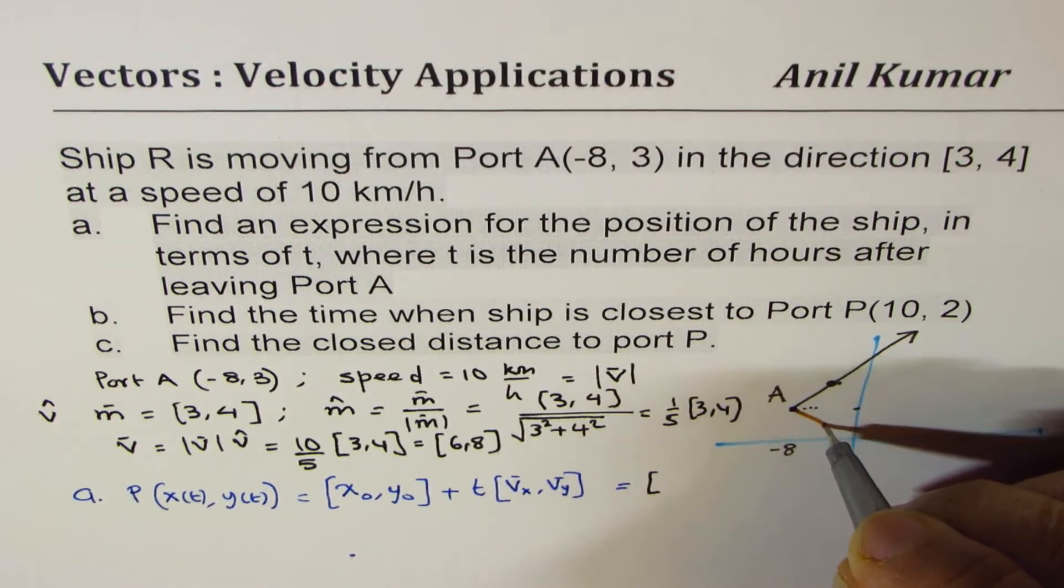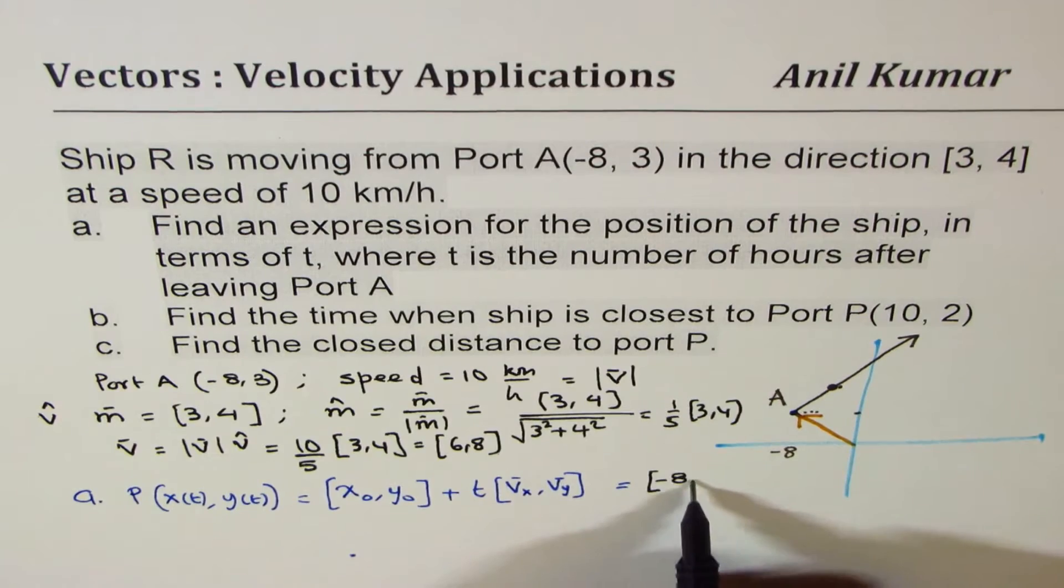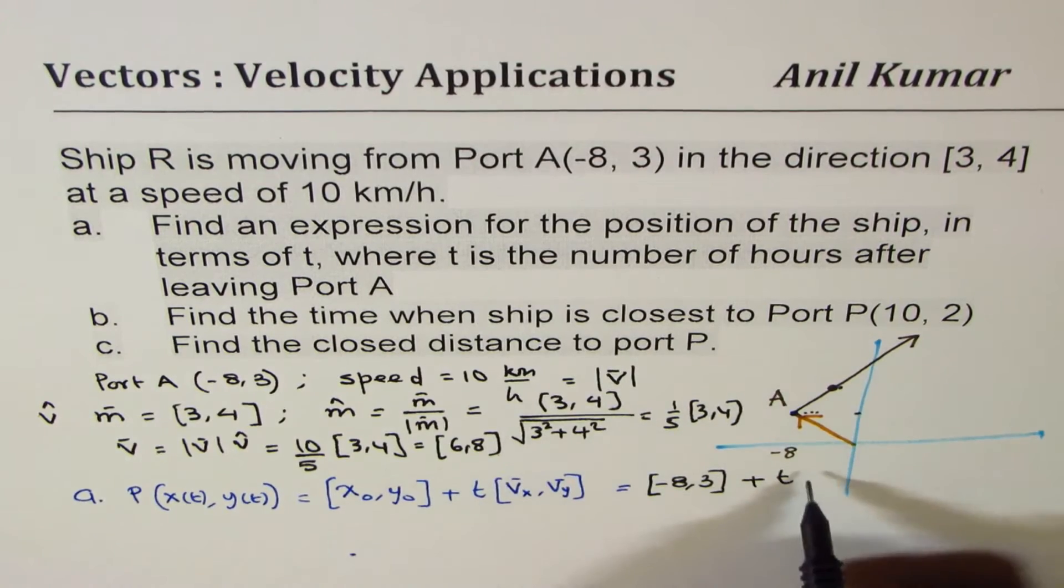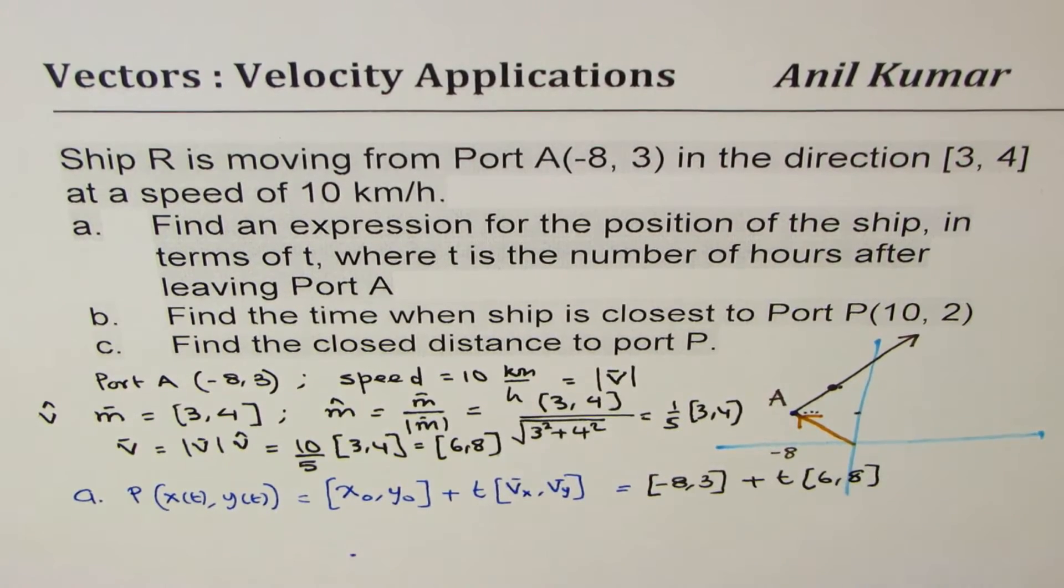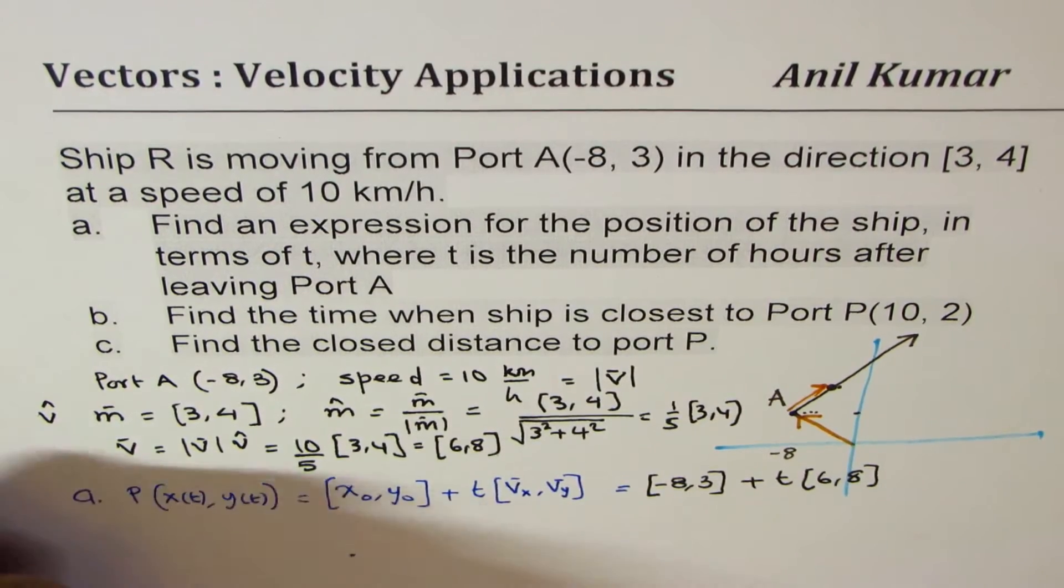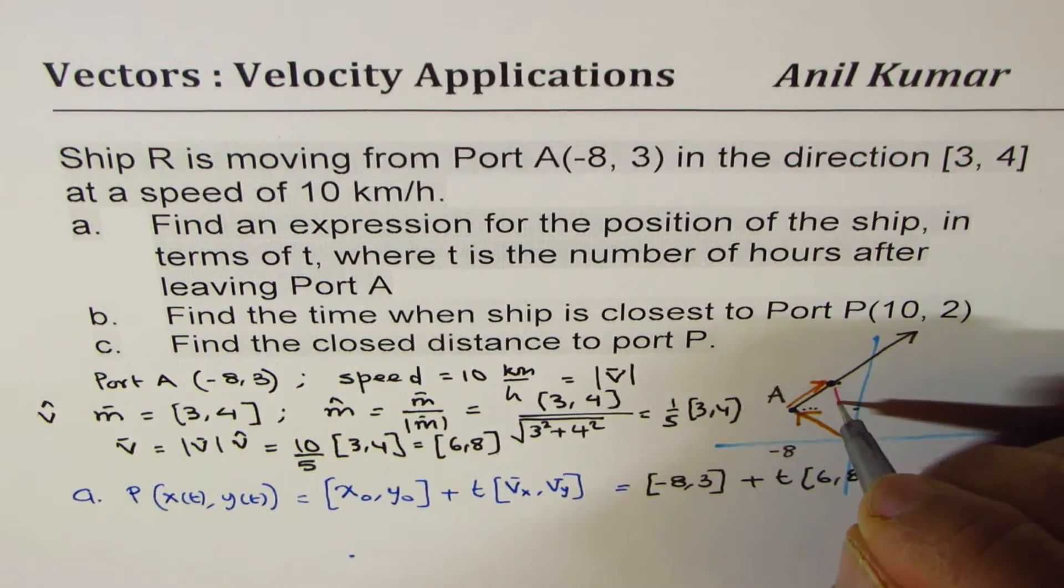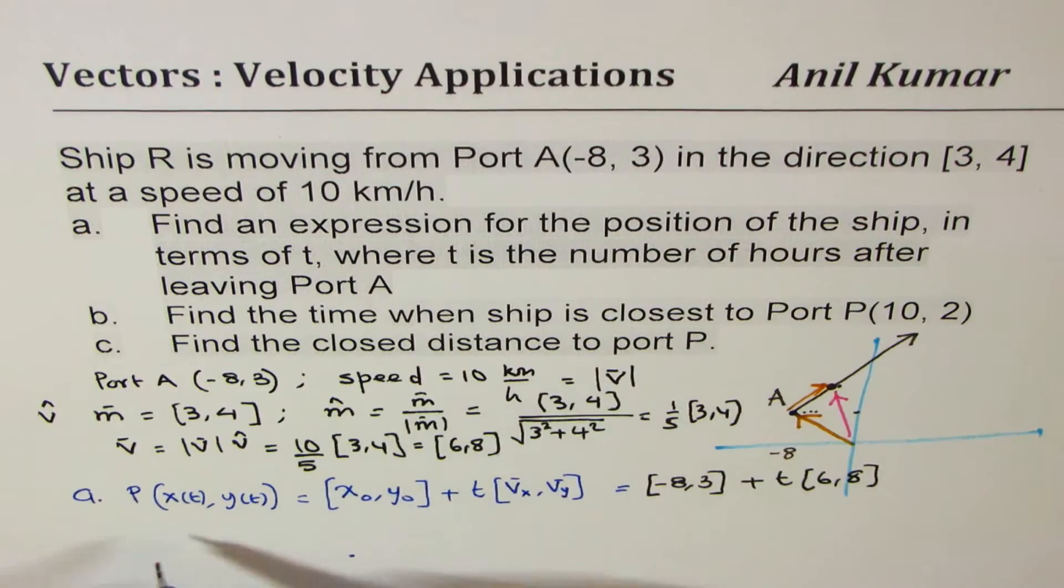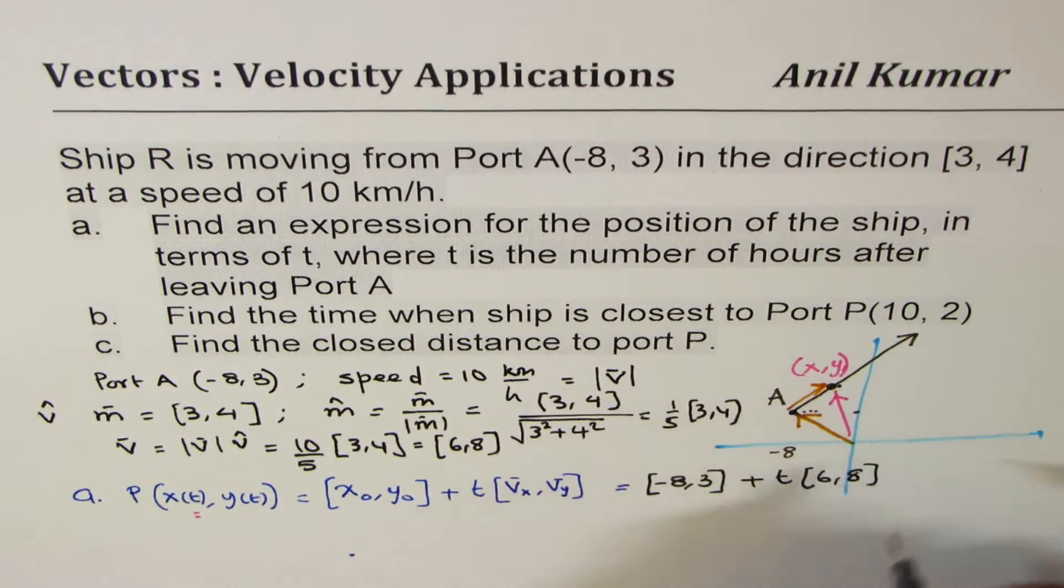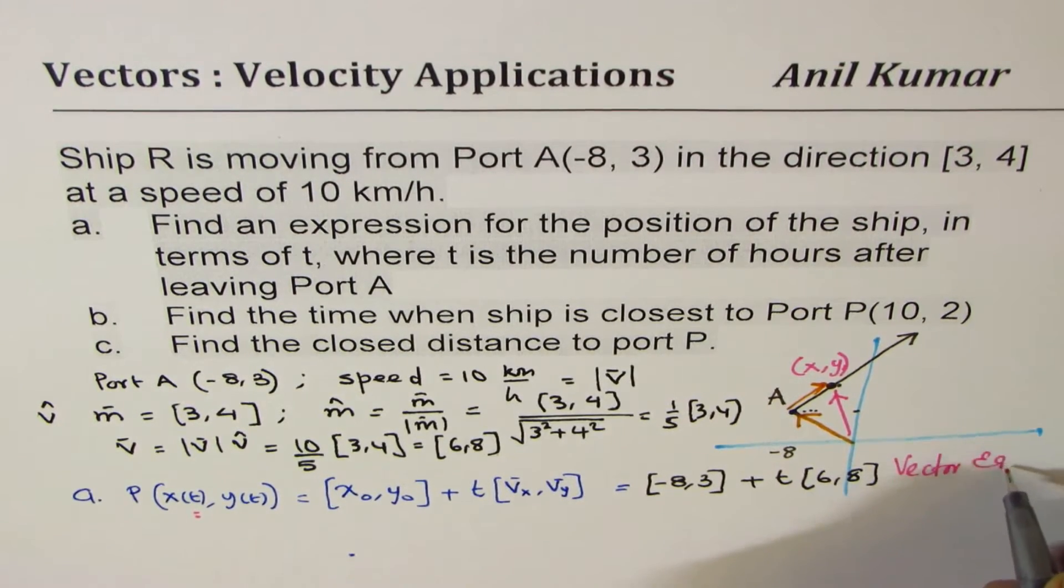And we are moving along this direction, which is (6, 8). That is, we are moving along this direction. So any point on this line, which is any general point like this, could be represented by this. So let this point be, just say, (X, Y). So that is your vector equation. So we call this as a vector equation for position.